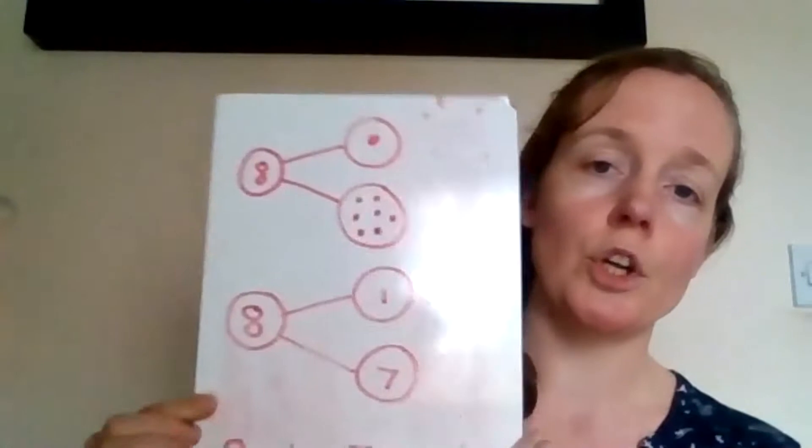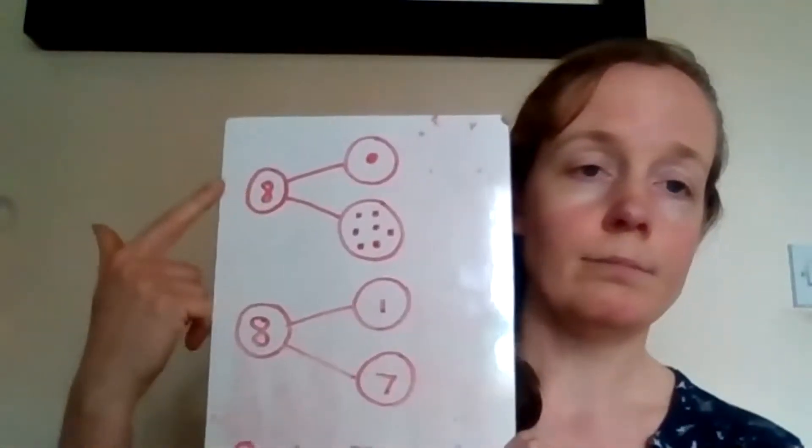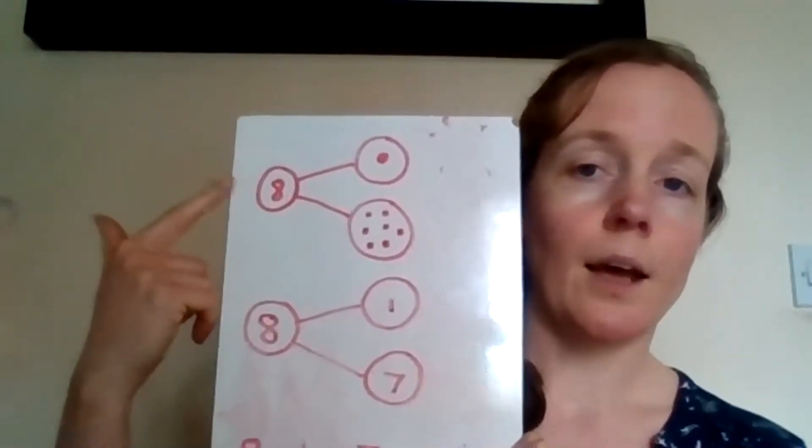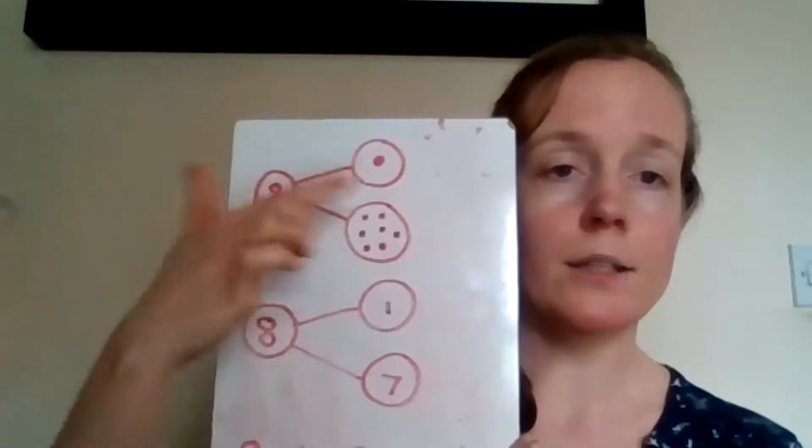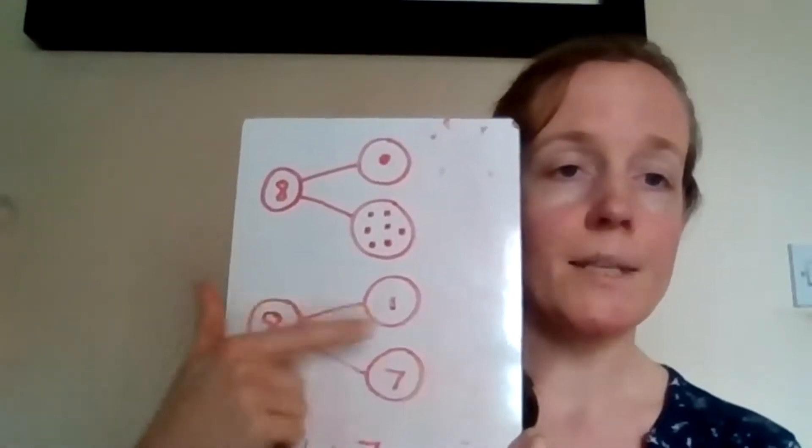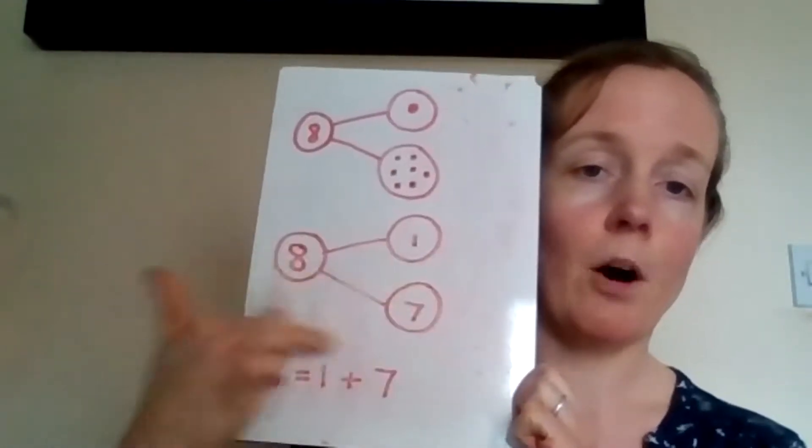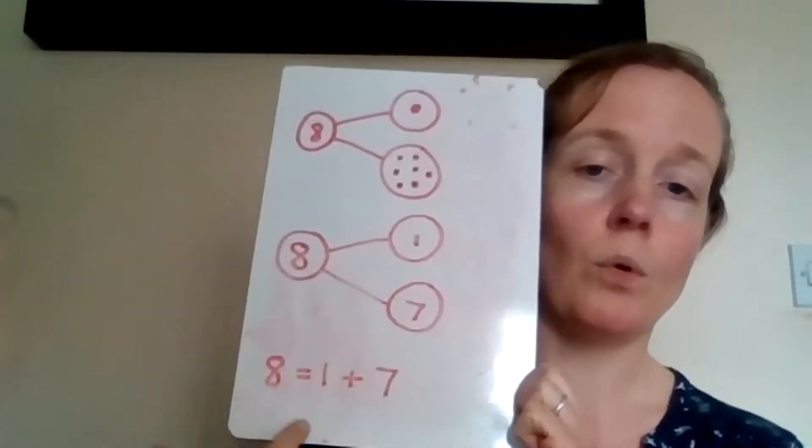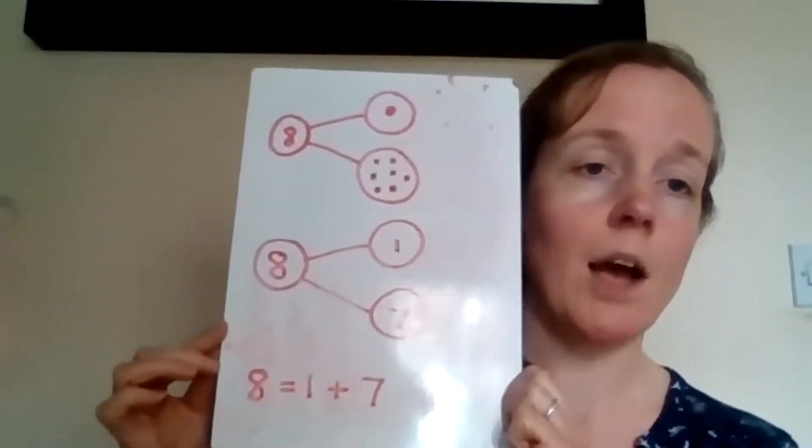And talk about how we can record, because it's really important that we record so that we can start noticing patterns. Okay, so you might want to draw your whole and then your parts. You might want to do the numbers in the part-part-whole picture, or you might just want to write the numbers. It's entirely up to you.